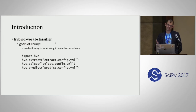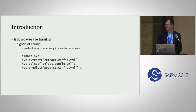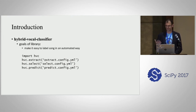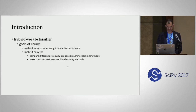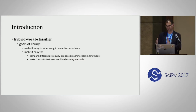The goals are to make it easy to label song in an automated way. Here's my three-liner of code — it's actually more like a four-liner with many hours of waiting for your computer to run and staring at plots. But the point is it tries to make it as easy as possible to do this analysis, and also easy to compare different proposed methods and maybe try out new machine learning methods.